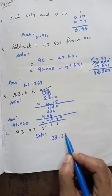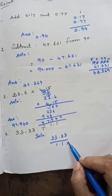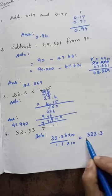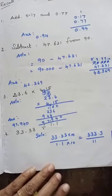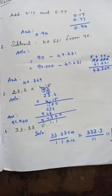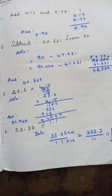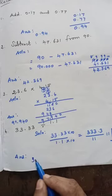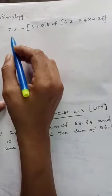Fourth problem: 33.33 divided by 1.1. First make the denominator a whole number — multiply both numerator and denominator by 10, so 333.3 divided by 11. Now divide by 11: 11 threes are 33, bring down 3. 3 is not enough, so add a zero and bring down 3 — keep the point. 11 threes are 33, so the answer is 30.3.